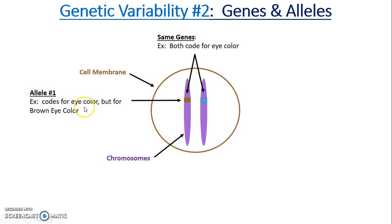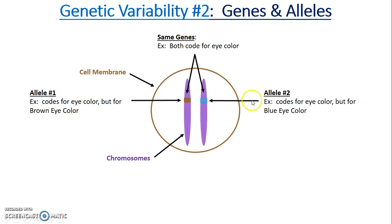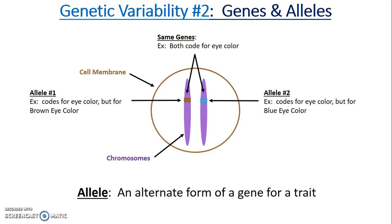Both chromosomes are coding for eye color, but notice they're different. The brown one codes for the brown eye color, whereas the other gene also codes for eye color but will code for blue eye color. Because they're the same gene but code for different traits, they are known as alleles. An allele is an alternate form of a gene for a trait.